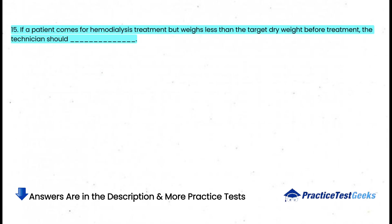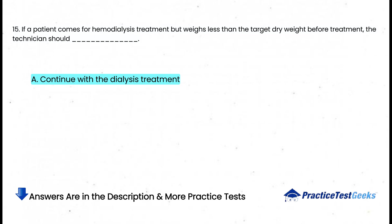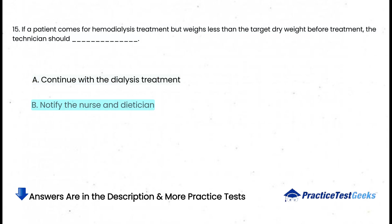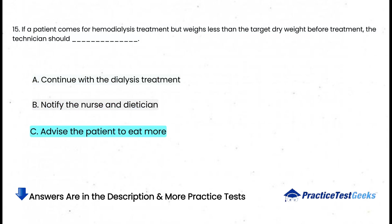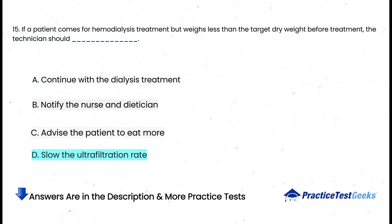If a patient comes for hemodialysis treatment but weighs less than the target dry weight before treatment, the technician should: a. Continue with the dialysis treatment, b. Notify the nurse and dietician, c. Advise the patient to eat more, d. Slow the ultrafiltration rate.